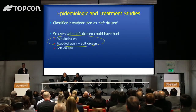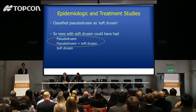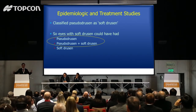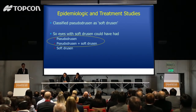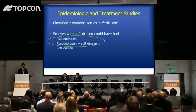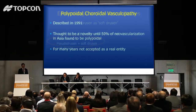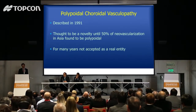In big epidemiologic studies like the Beaver Dam study or the AREDS study, pseudodrusen were classified as a kind of soft drusen. So the risk attributed to soft drusen actually reflects the combined risk of pseudodrusen plus soft drusen. We don't really have a good idea of how much risk is posed by pseudodrusen or by pure soft drusen alone — there are some later studies on pseudodrusen risk factors, but precise numbers are lacking because of that classification error.